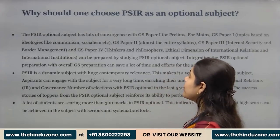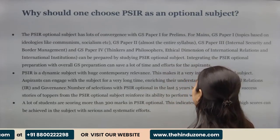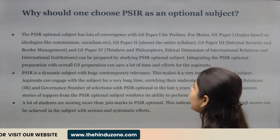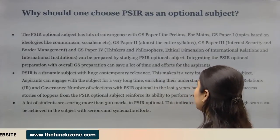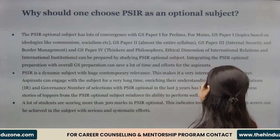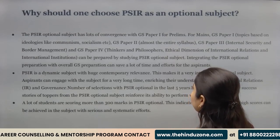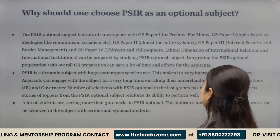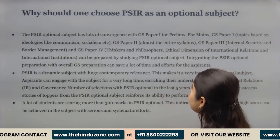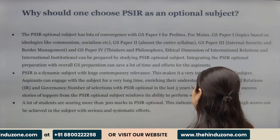The PSIR optional subject has lots of convergence with GS paper 1 for prelims, and for mains GS paper 1 topics based on ideologies like communism, socialism, etc. GS paper 2 covers almost the entire syllabus. GS paper 3 covers internal security and border management, and GS paper 4 covers thinkers and philosophers, ethical dimensions of international relations, and international institutions — all of which can be prepared by studying PSIR optional.